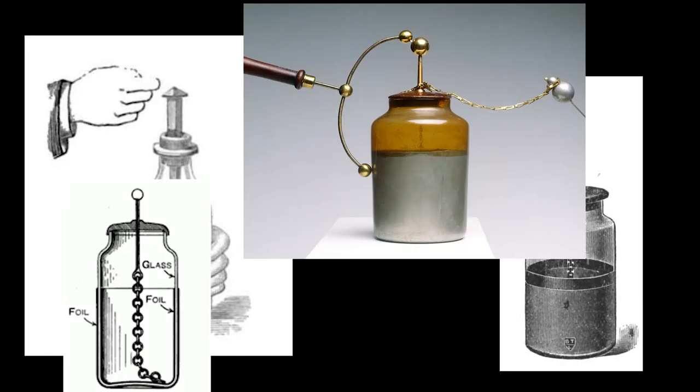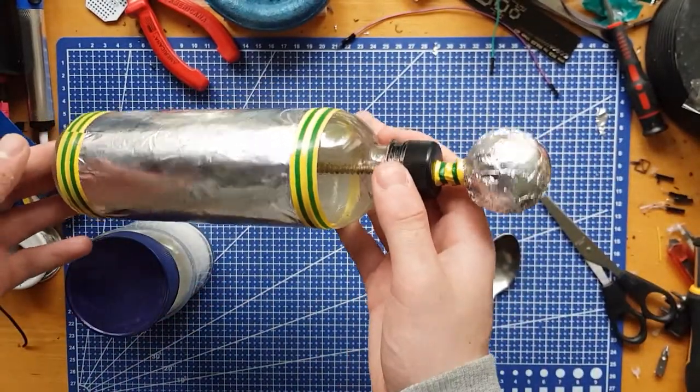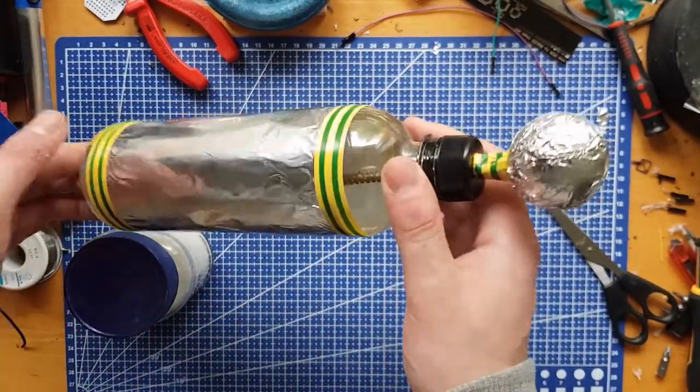So this is a Leyden jar. It is used to store high voltage electric charges and in this video I will show you how to make one and how to properly charge it.